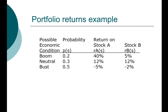Let's take a look at an example. We are looking into the future with three possible outcomes — three states of the economy. The economy will either be in a boom, neutral, or go into a bust. There is a 20% chance of a boom, a 30% chance of neutral, and a 50% chance of a bust. We have returns for two stocks: Stock A and Stock B. Stock A will return 40% in a boom, 12% in a neutral state, and lose 5% if the economy enters a bust.